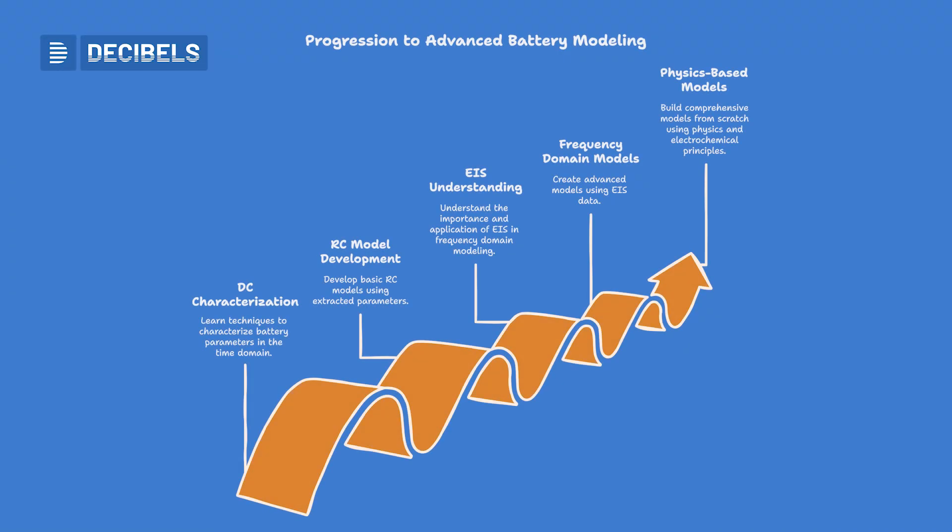From module 5 onwards, the focus shifts to testing batteries for specific approaches and developing simulation models, where we develop battery models with time domain and frequency domain approaches. To develop time domain models, you will need to perform DC characterization techniques, and it is highly important to understand how to choose those parameters.